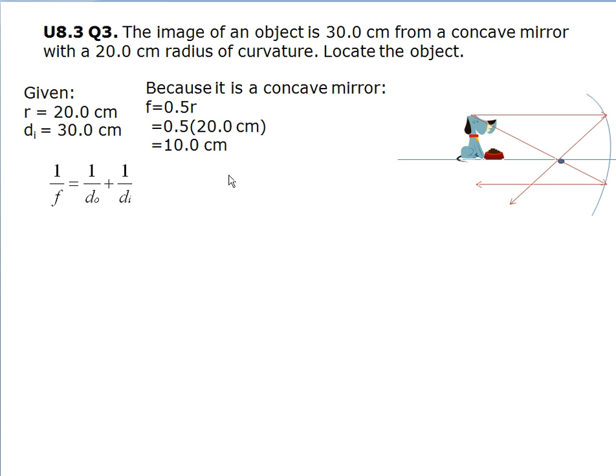Now that we have the focal point, we can go ahead and use the mirror and lens equation to figure out this problem. First, we want to isolate the variable that we are trying to find. In this case, it will be dO.